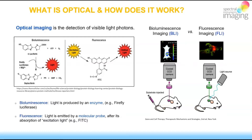Optical imaging is essentially the detection of visible light photons. Bioluminescence optical imaging is the detection of visible light photons generated by enzymes, typically luciferases such as firefly luciferase. It is important to realize that these enzymes are active only in the cytosol of living cells where they have access to cellular ATP and oxygen, and of course their substrate d-luciferin in the case of firefly luciferase.